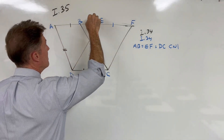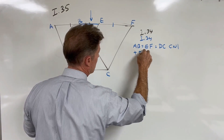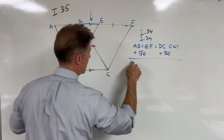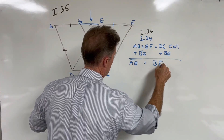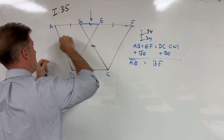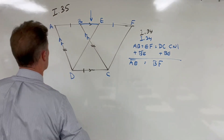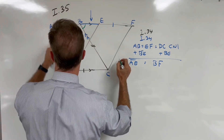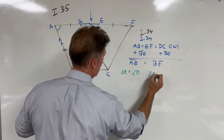We're going to add segment BE to both sides, which gives us AE equal to BF. We also have two parallel lines cut by a transversal, and we know that makes the exterior angle equal to the opposite interior angle — so the angle at A equals the angle at B. This is Prop 29.